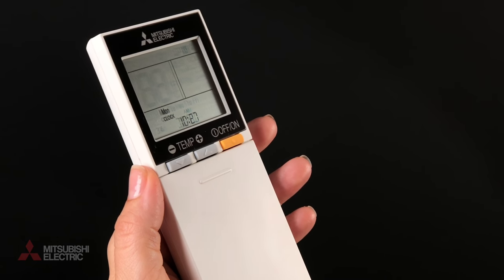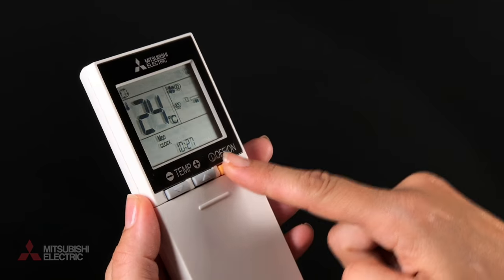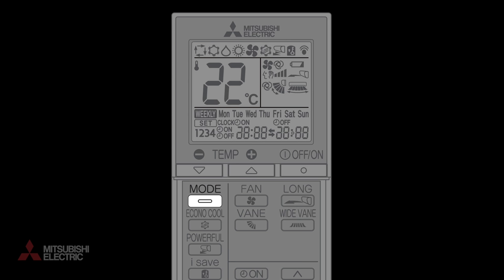Next, turn your air conditioner on. Press mode to select your desired operational mode.